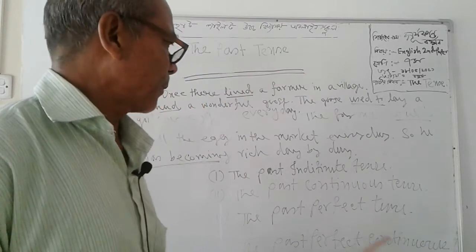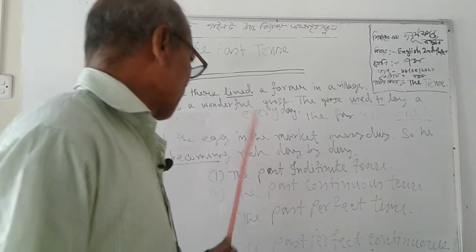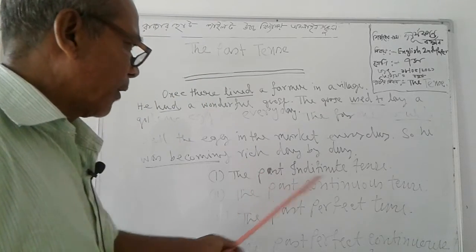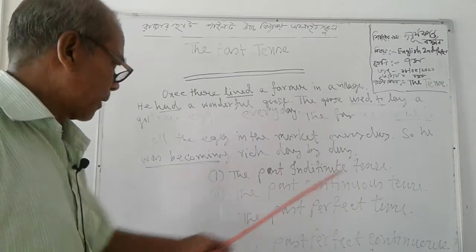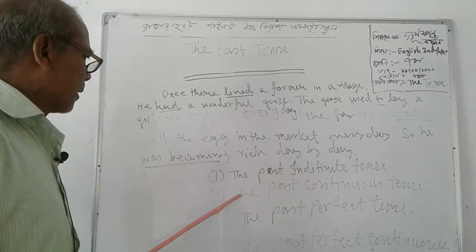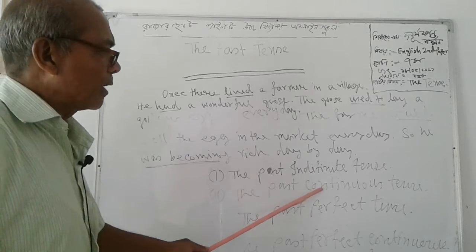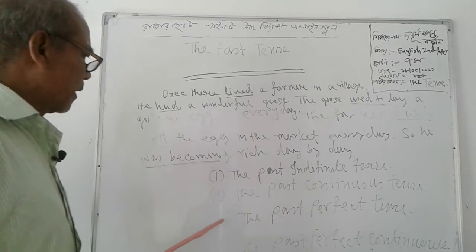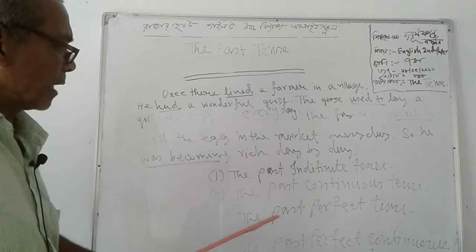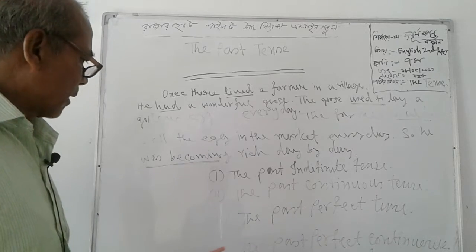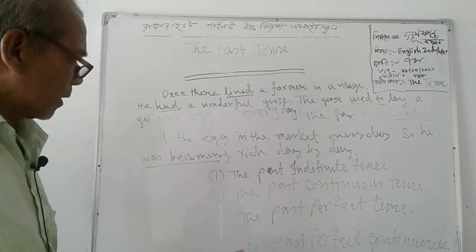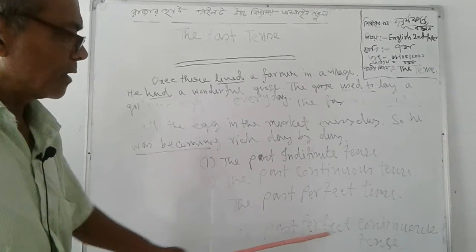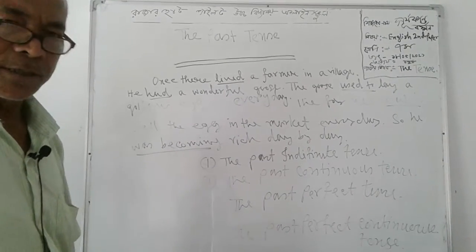As for example, these are: number one, the past indefinite tense; number two, the past continuous tense; number three, the past perfect tense; number four, the past perfect continuous tense.